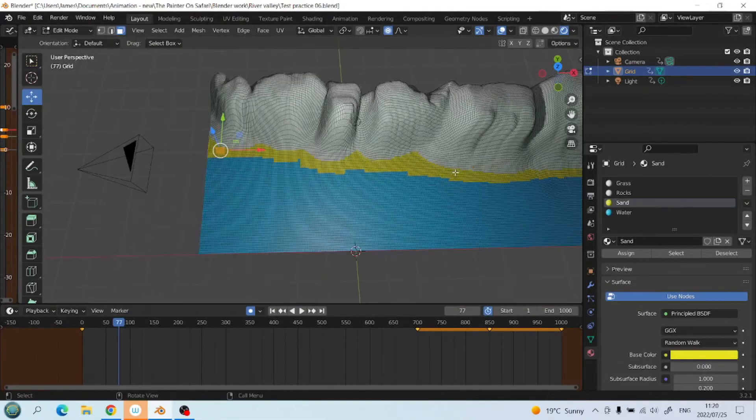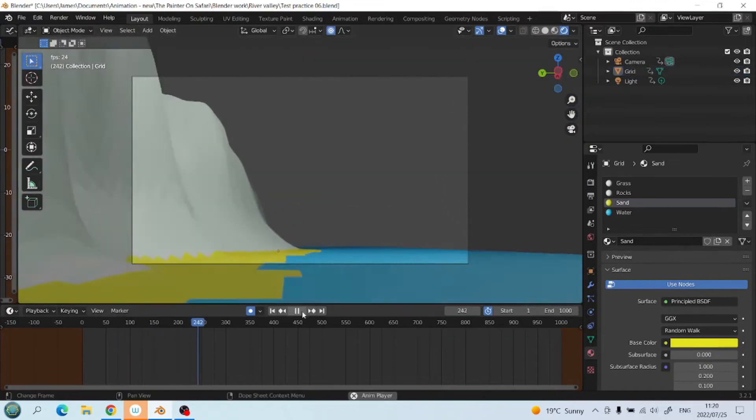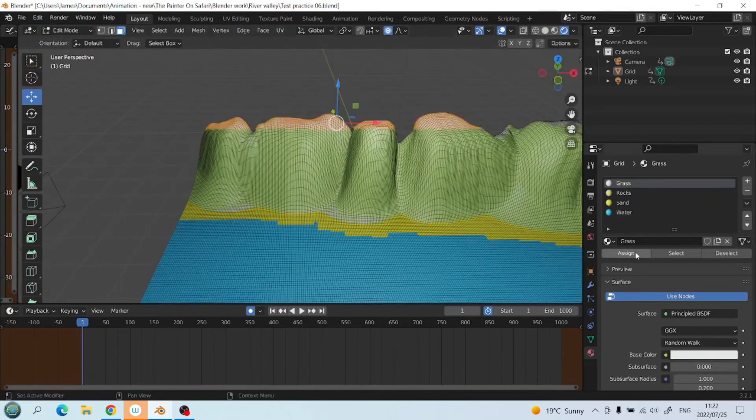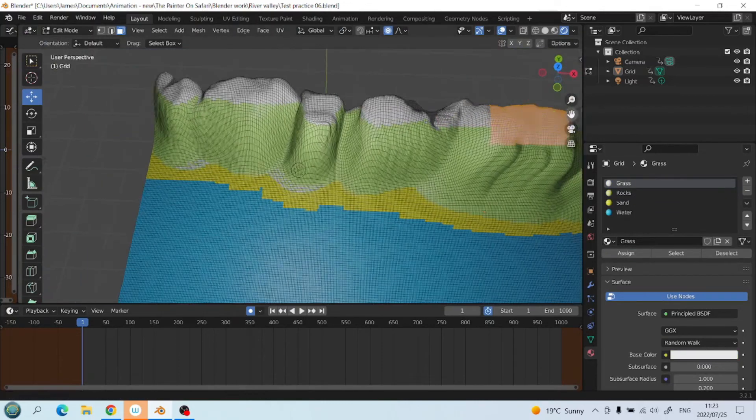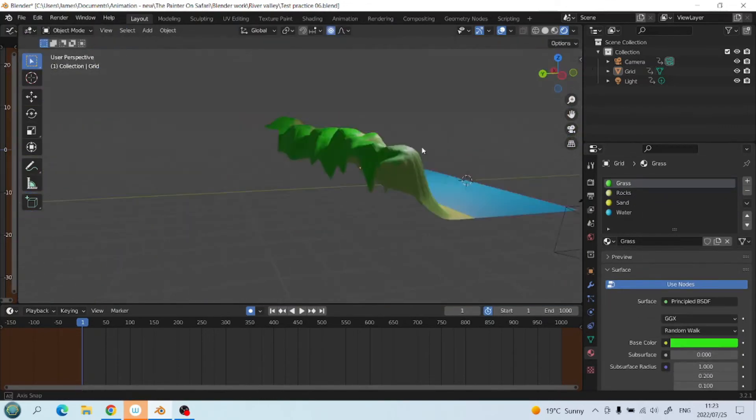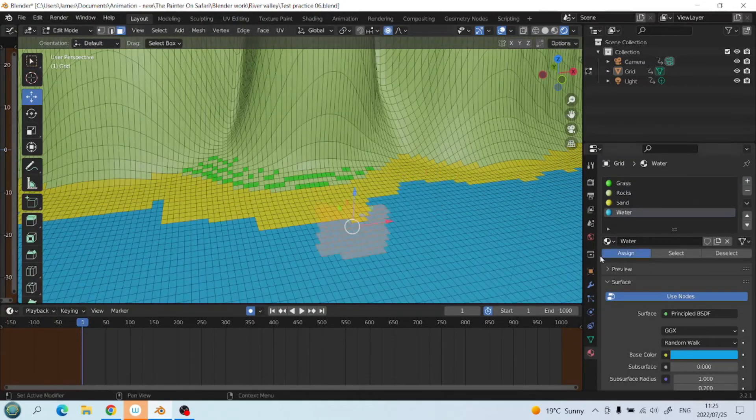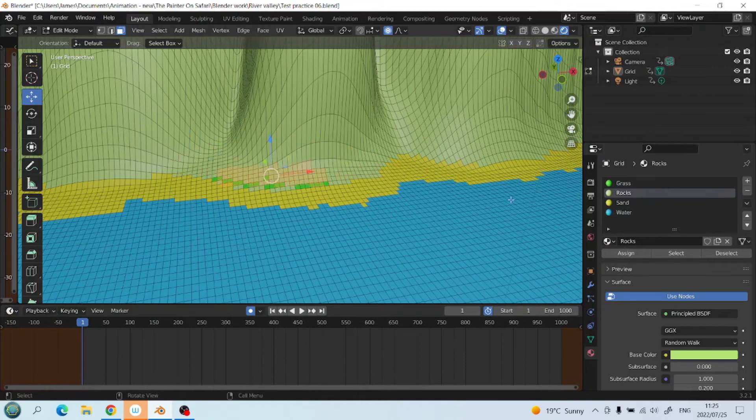Once I got that set up satisfactorily, I went back and selected the mesh and broke it up into different materials. So it will have cliff face, which I've made in light green here, the grass and bush at the top of the cliffs in dark green.